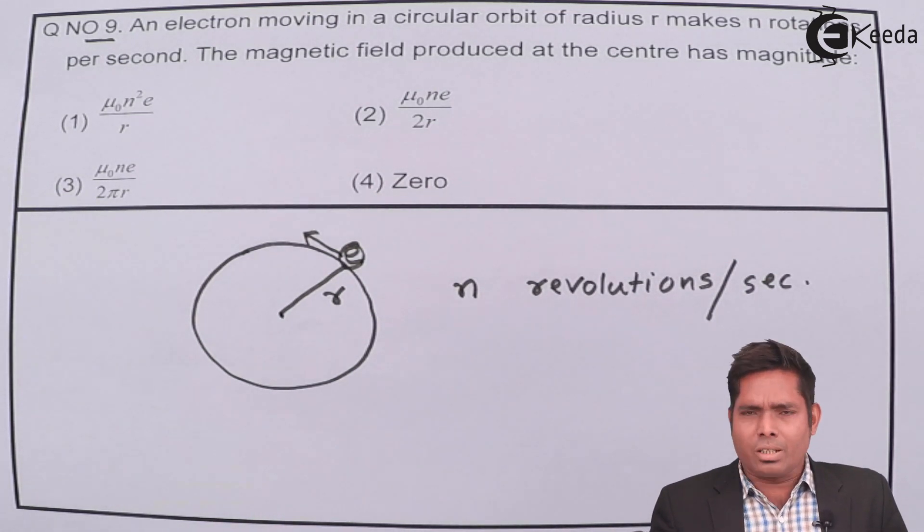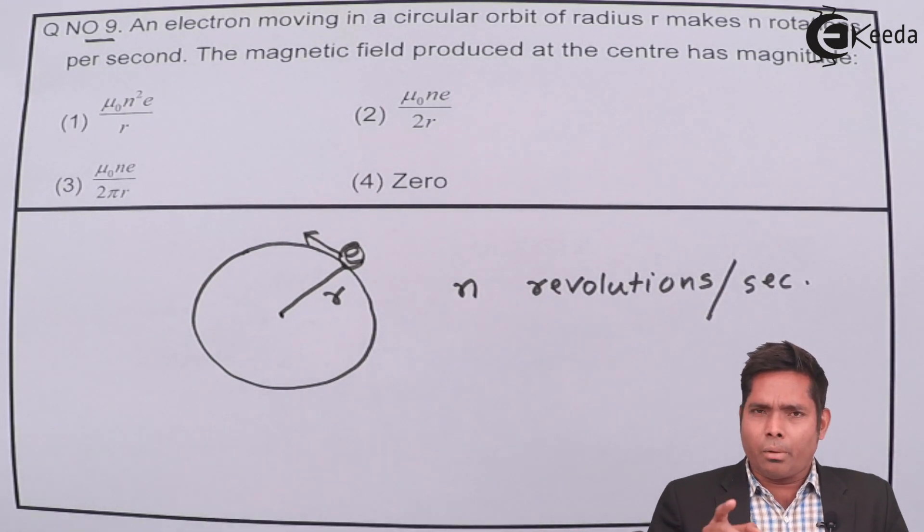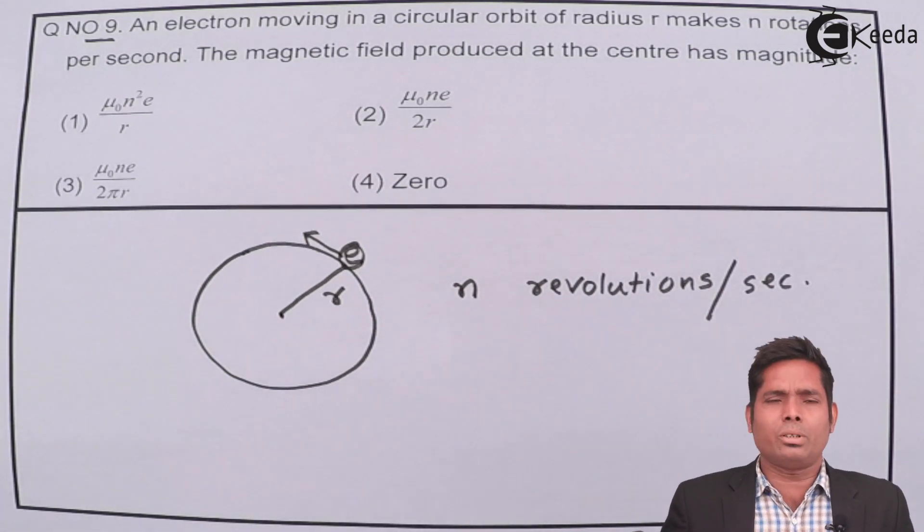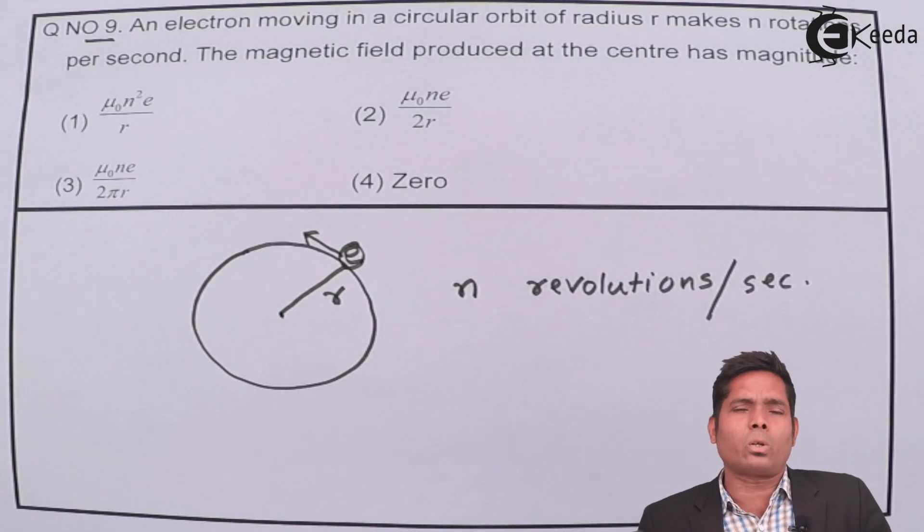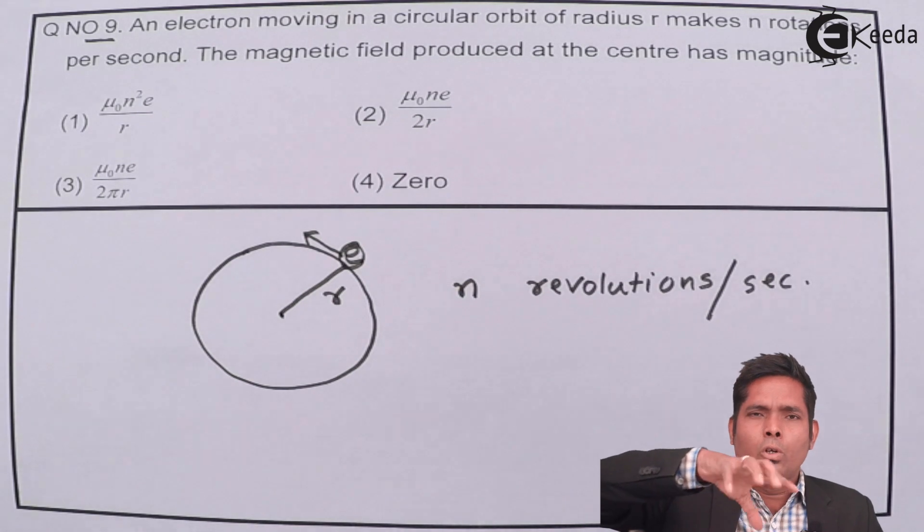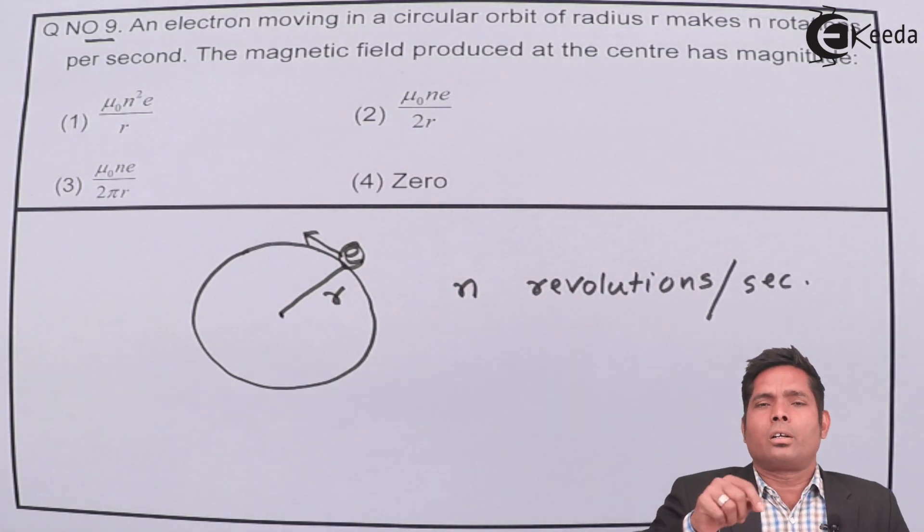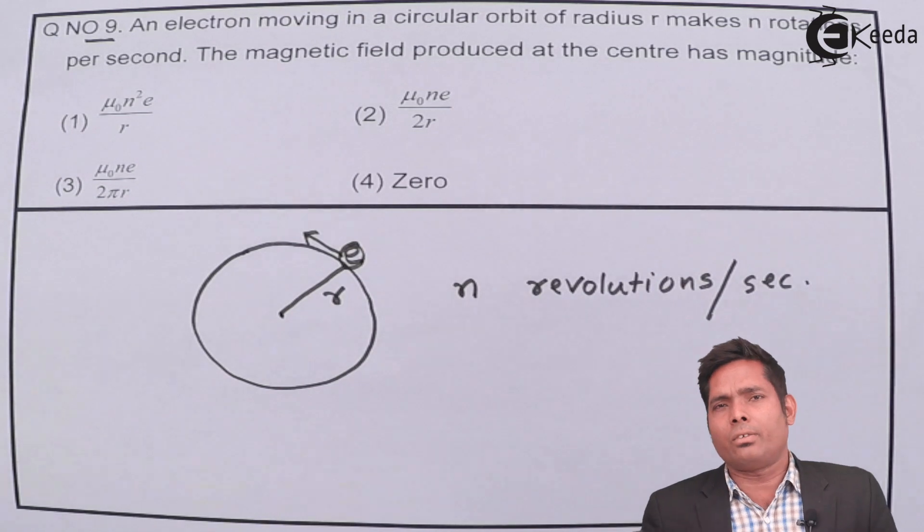Now, in this situation, whether the revolving of electron, because there is exactly no current flowing through this, but if we can relate the revolution of electron in a circular orbit to the current carrying loop, then we can find the magnetic field.